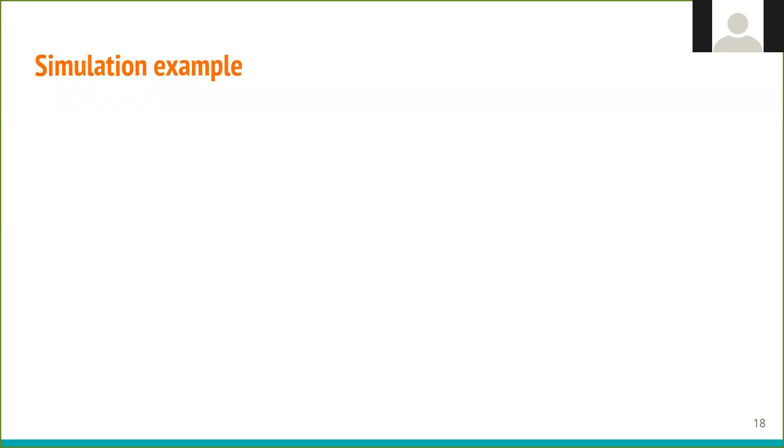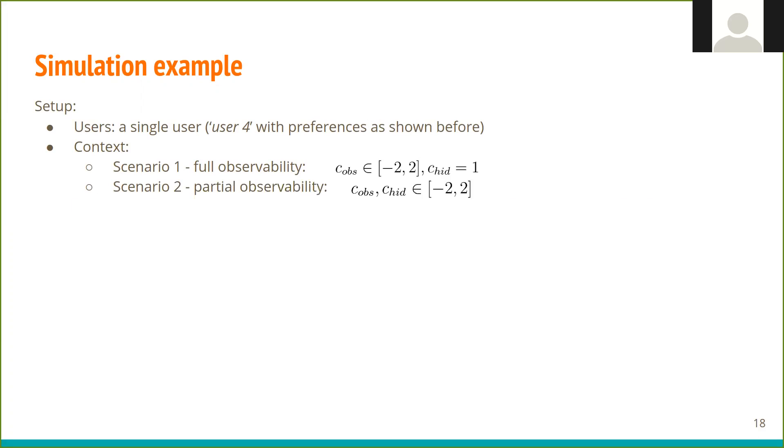Let's see a simple example of a simulation. We consider a single user and two scenarios for context, one with full observability with hidden context fixed and one with partial observability. The recommendation space is one-dimensional between minus 10 and 10, and we limit the number of interactions between users and agent to 200.